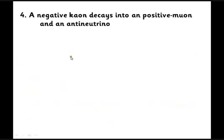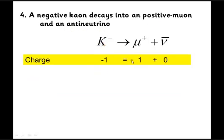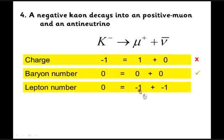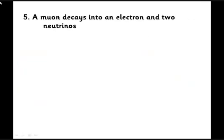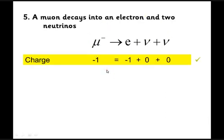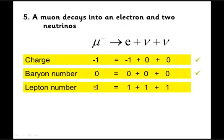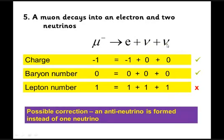A negative kaon decays into a positive muon and an anti-neutrino. Charge: minus one equals plus one plus zero — that doesn't work. Lepton number also fails. To fix it, we need to change the mu plus (the anti-muon) into a muon, giving lepton number minus one on both sides. Final example: a muon decays into an electron and two neutrinos. Charge and baryon number work, but lepton number doesn't. The fix is to make one of the neutrinos an anti-neutrino, giving an electron, a neutrino, and an anti-neutrino.